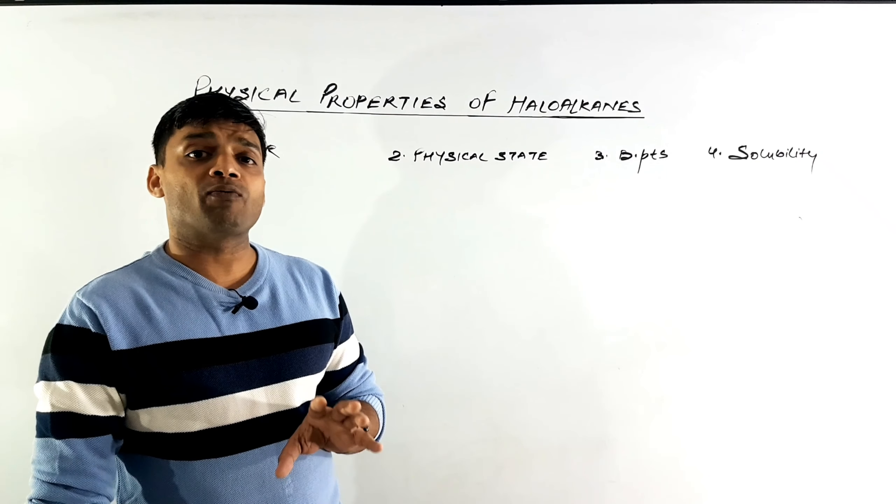Finally, we come to the solubility of alkyl halides. Solubility follows the concept of 'like dissolves like' — a polar solute is soluble in a polar solvent and a non-polar solute is soluble in a non-polar solvent. When we discuss the solubility of alkyl halides in water: water is a bent-shaped polar molecule, and alkyl halides are also polar molecules with partial charge separation (partial negative and partial positive). So as per 'like dissolves like', we would expect alkyl halides to be soluble in water.